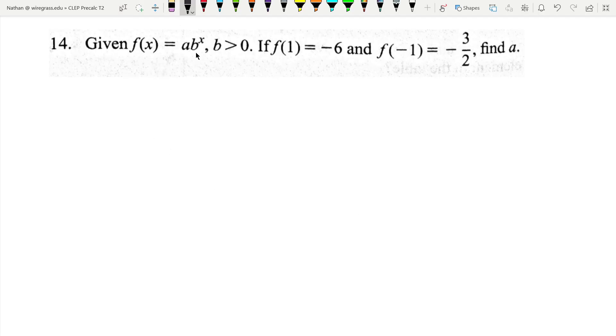Given that f(x) is an exponential function with b greater than zero (they should also say b does not equal one), f(1) equals negative six, so negative six is here.